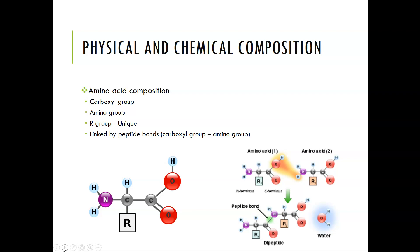Let's quickly review the physical and chemical composition of amino acids. Each amino acid has a carboxyl group, which is this one right here, an amino group, which is this one right here, and an R group attached to a carbon.